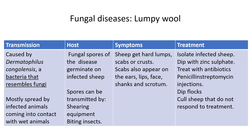Symptoms include hard lumps, scabs, and crusts on the skin, and wool falling out. Scabs appear on the ears, lips, face, shanks (the hindquarters), and the scrotum in males. For treatment, isolate infected animals. Dip with zinc sulfate — sulfur is very effective against fungal diseases generally.